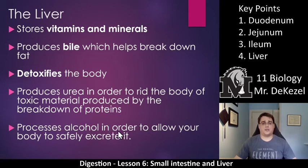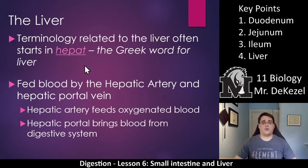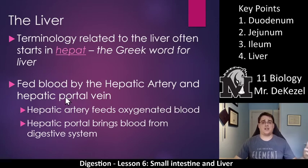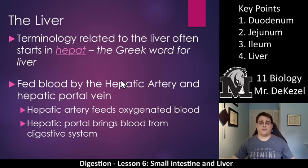The liver processes alcohol in order to allow your body to safely excrete it. There's a lot going on in the liver. An important terminology note: words starting with 'hepat-' are related to the liver — hepat is the Greek word for liver. The blood that feeds the liver is delivered by the hepatic artery, which carries oxygenated blood, and the hepatic portal vein, which brings blood back from the digestive system. Hepatic always refers to the liver — hepatic disease is liver disease, hepatic failure is liver failure.